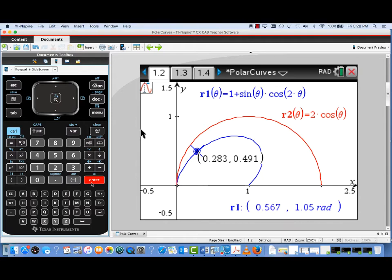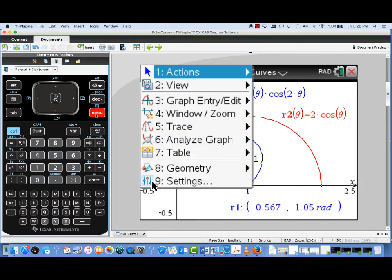it's going to place a point at the current location of the trace crosshairs, and now I can see the X and Y coordinates at that point and compare those to the polar coordinates that are shown down below with trace on.